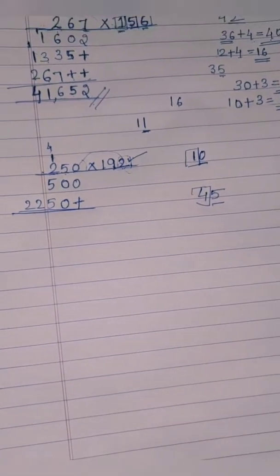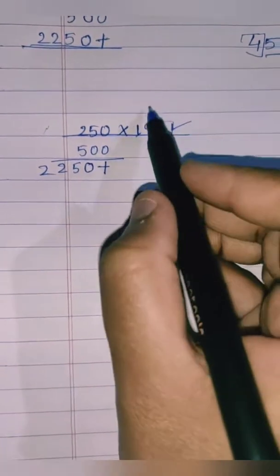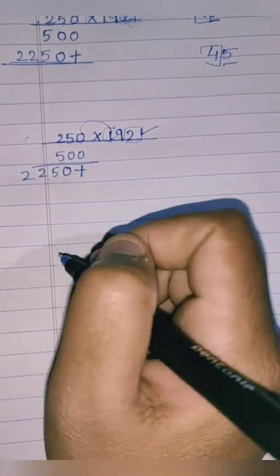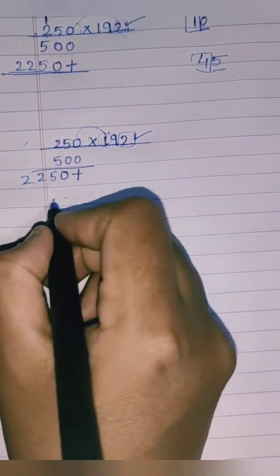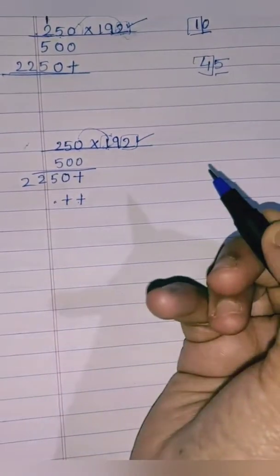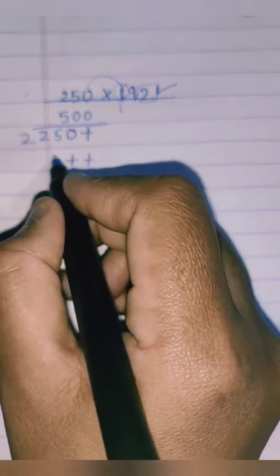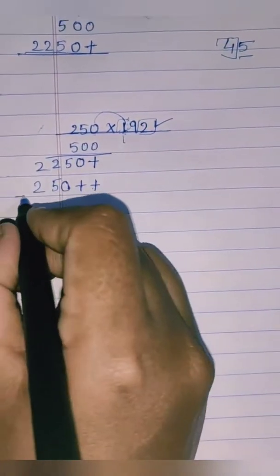Now we've done with the tens place. The last digit is 1 in the hundreds place, so let's multiply 1 with the whole number. Since it's in the hundreds place, we write the answer shifted two places. One into 0 is 0, one fives are 5, one twos are 2. Now let's add all these numbers.